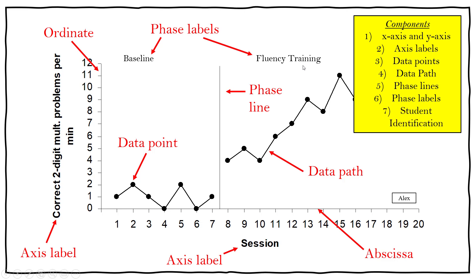You need phase labels so that somebody looking at the graph can tell which is the baseline phase and which is the intervention phase. You also need to identify which student the data is for — typically you put their name in a box on the right side just above the x-axis. Graphs in ABA are typically black and white with no grid lines and no border box around the graph, so it's clear and concise for easy visual inspection of your intervention's effectiveness.